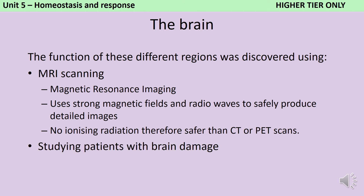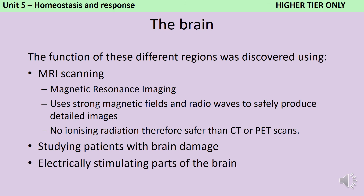The second technique is studying patients who've had brain damage. If somebody's been in a traffic accident and lost their memory, it might be possible to look at their brain, see which part has been damaged, and say that's probably to do with processing memories. The third thing scientists can do is electrically stimulate parts of the brain and see what happens.